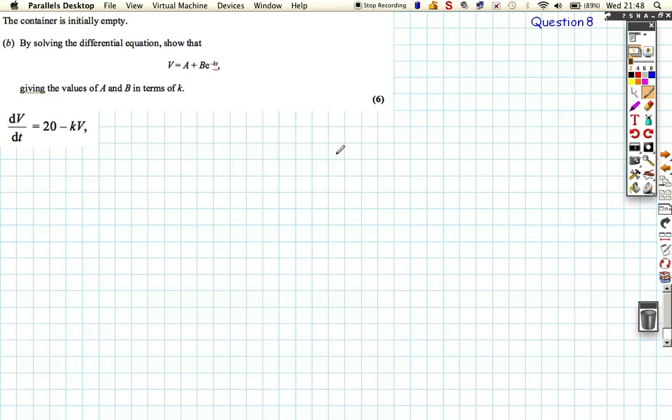Okay, so we've now got the container is initially empty. Well, that's an important piece. We're going to need that in a sec, but let's just write it down now because it comes in order. Well, that means the volume is zero when t is zero. Initially means t equals zero, and empty means the volume is zero.